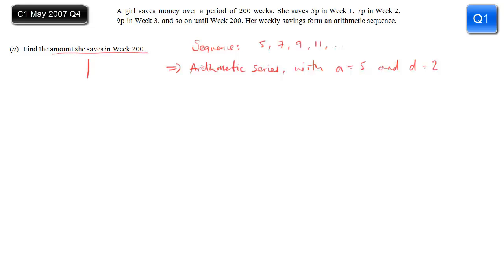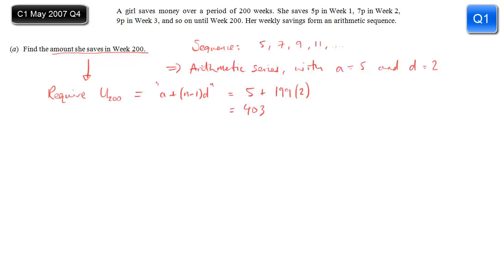Part a, we want the amount she saves in week 200. Well, this is just the 200th term, u200. So we can use the formula for the nth term: a plus n minus one, d. In this case, a is five, n is 200, so n minus one is 199, and d is two. So we simply put that into the formula and work it out. Five plus 398 is 403. And remember, that's 403 pence.